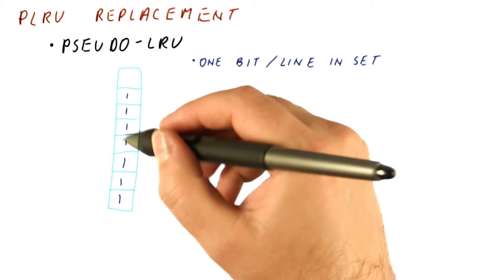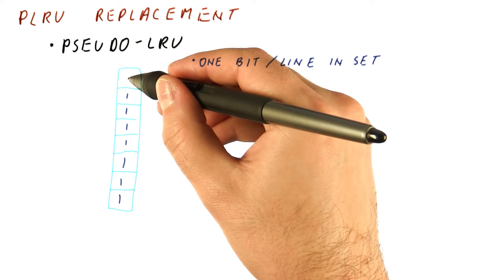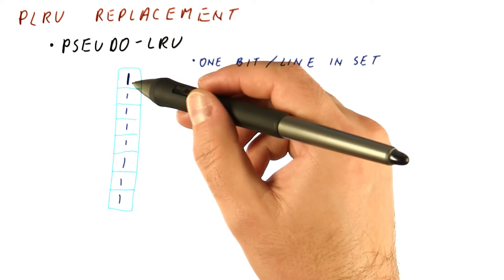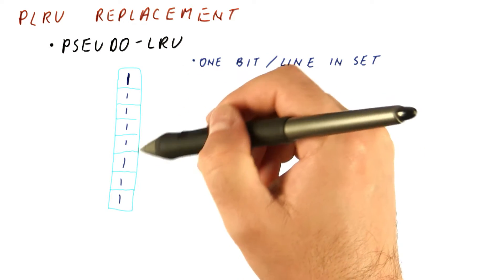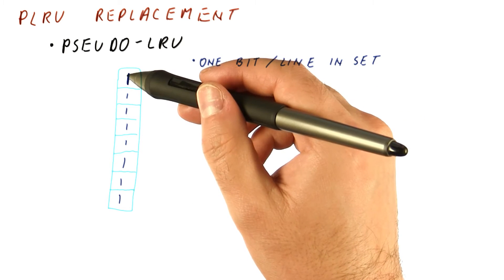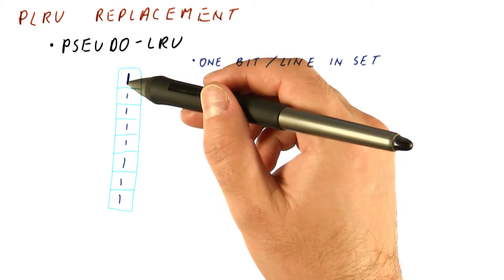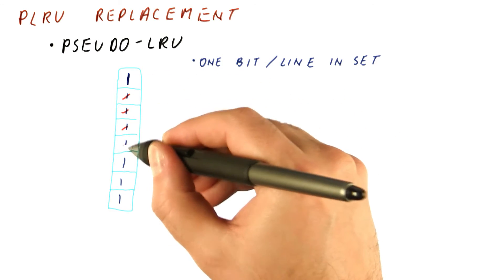Eventually, all of the bits will be set. We cannot replace anything, so we detect this situation where all the bits have become one. When we set the last zero bit to one, we zero out the remaining bits.